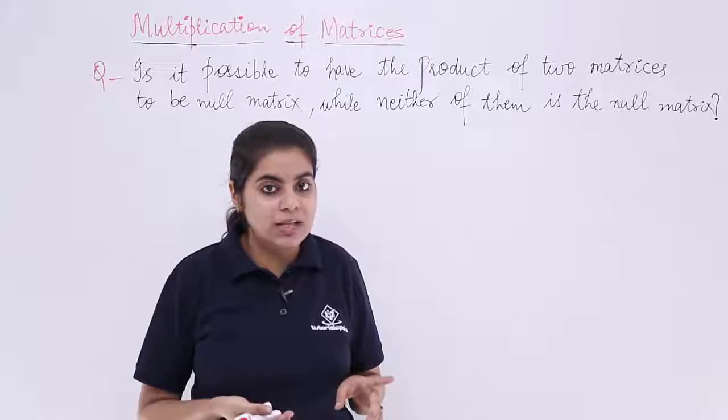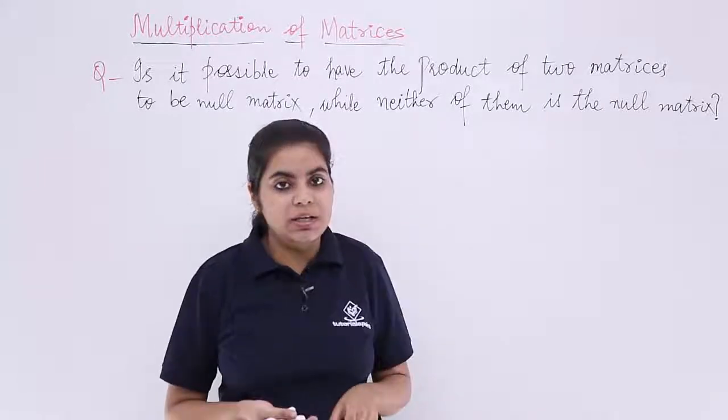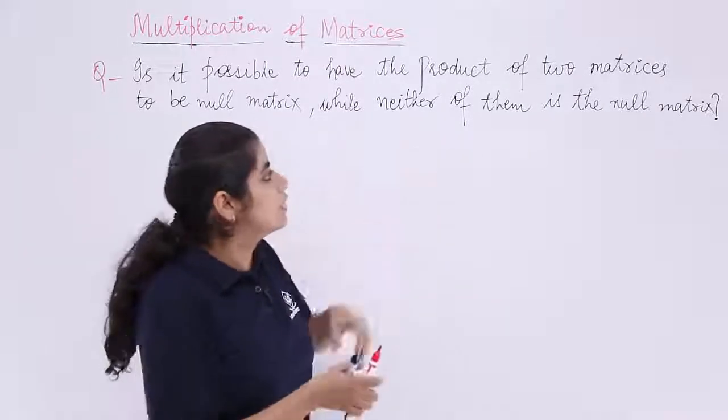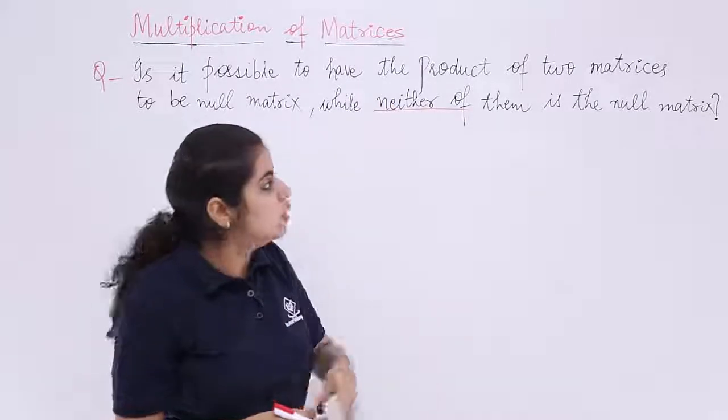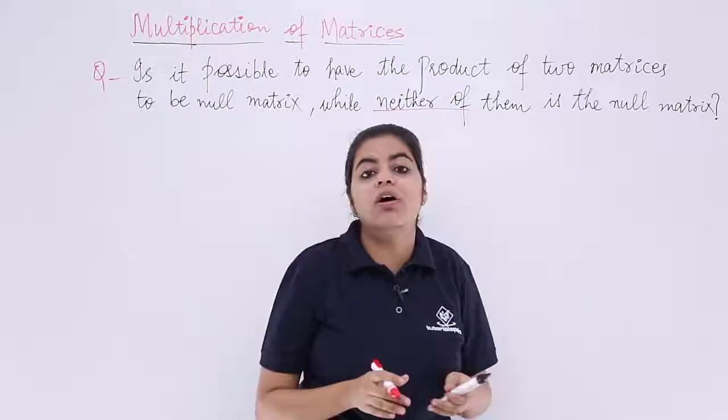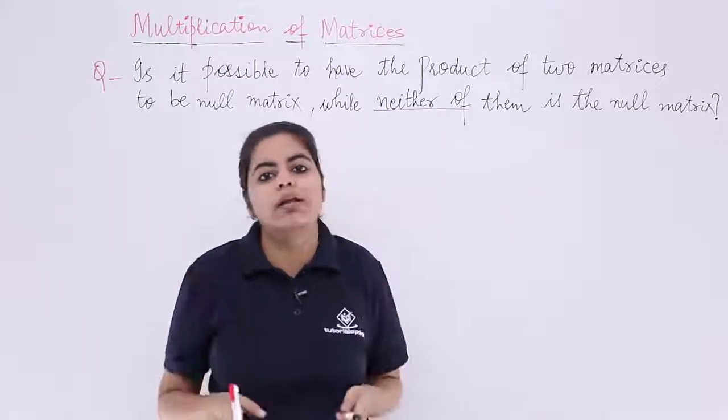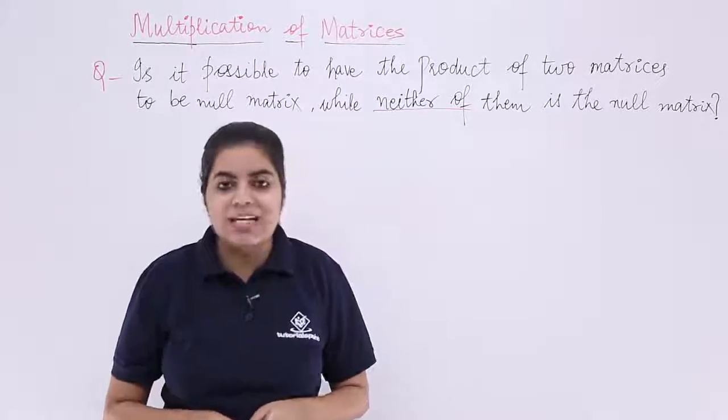But the question does not say that. It wants the result to be a null matrix. The condition is given that neither of them, not even one of them should be a null matrix. You cannot take both or one a null matrix. Let's see how to do it.